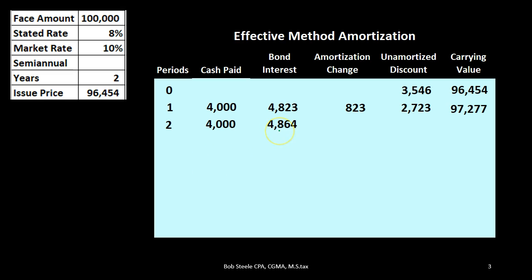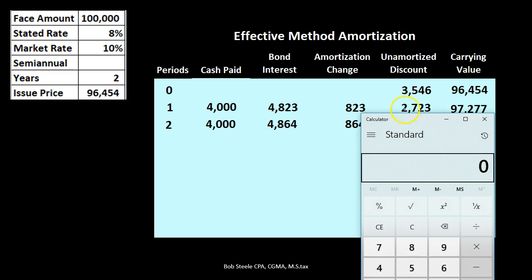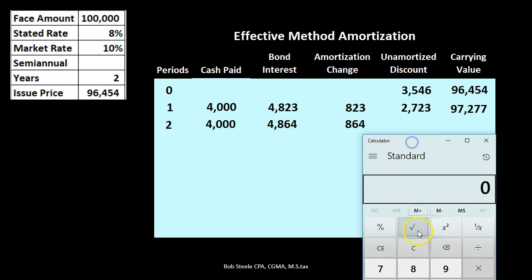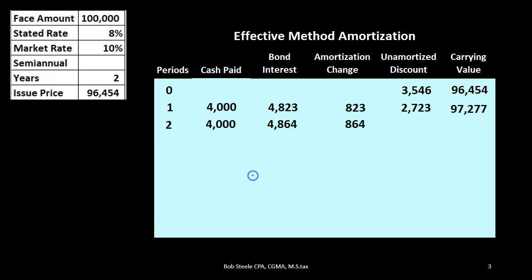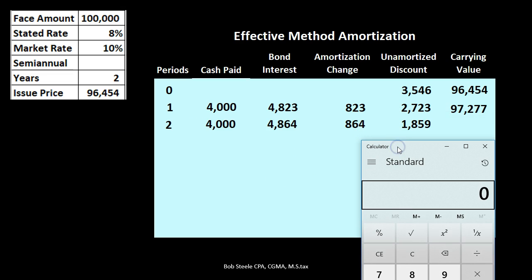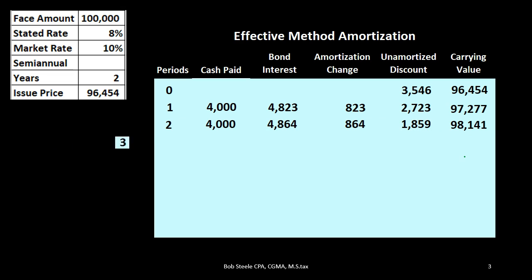Subtracting the two: $4,864 minus $4,000 gives us $864. The unamortized discount of $2,723 minus $864 gives us $1,859. The carrying amount is always the $100,000 face amount minus the unamortized discount of $1,859, giving us $98,141.